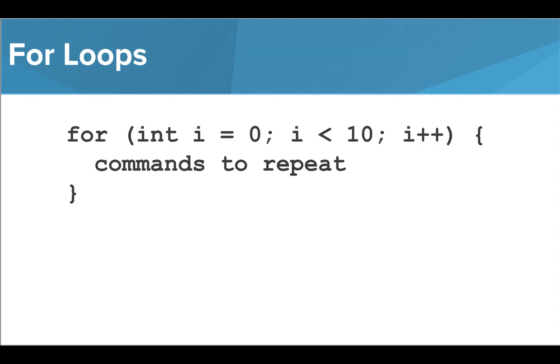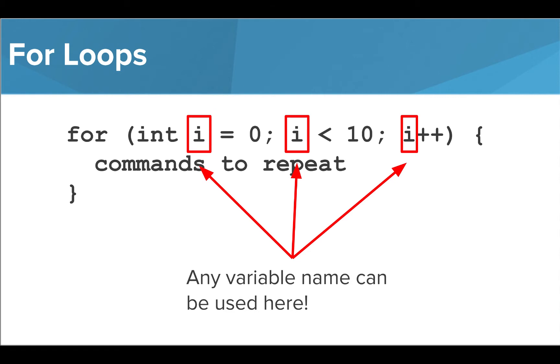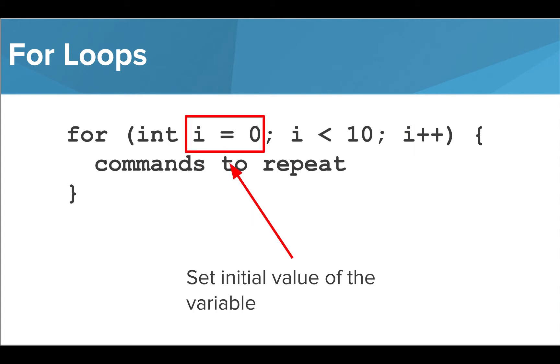To write a for loop, we use this syntax. Let's explain this a bit. First, we need to start with the keyword for written in lowercase letters. Inside the parentheses, we need to create a loop variable to track our progress. We do this by declaring the variable i as an int. We can see that variable here. Usually, we use i as the variable name here, but anything can be used. In this case, we are setting our variable to start at 0, but a different number can be used here too.